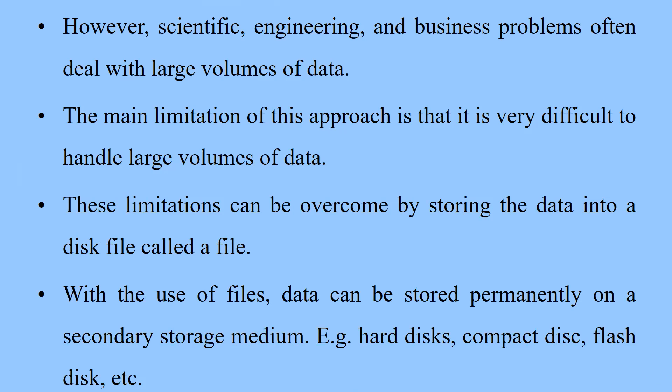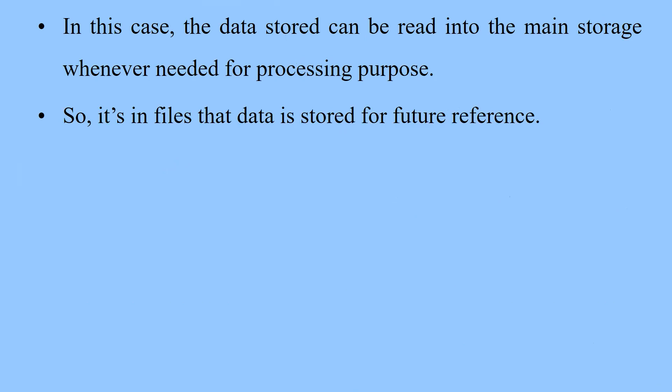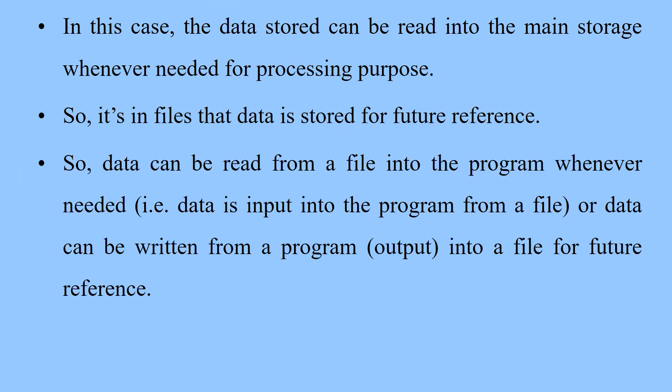With the use of files, data can be stored permanently on a secondary storage medium, for example, hard disks, compact disks, flash disks, among others. The data stored can be read into the main storage whenever needed for processing purposes. So it is in files that data is stored for future reference. The data can be read from a file into a program whenever needed — that is, data is input into the program from a file — or data can be written into a file for future reference.